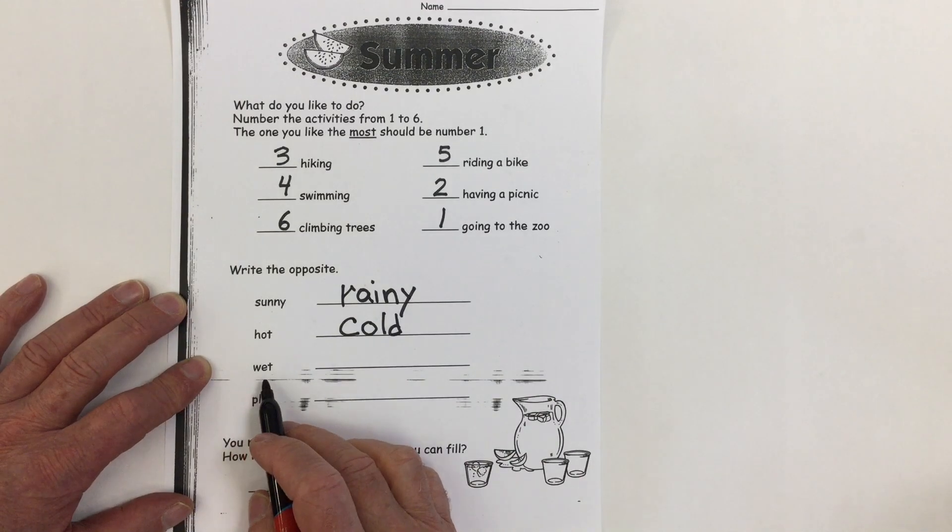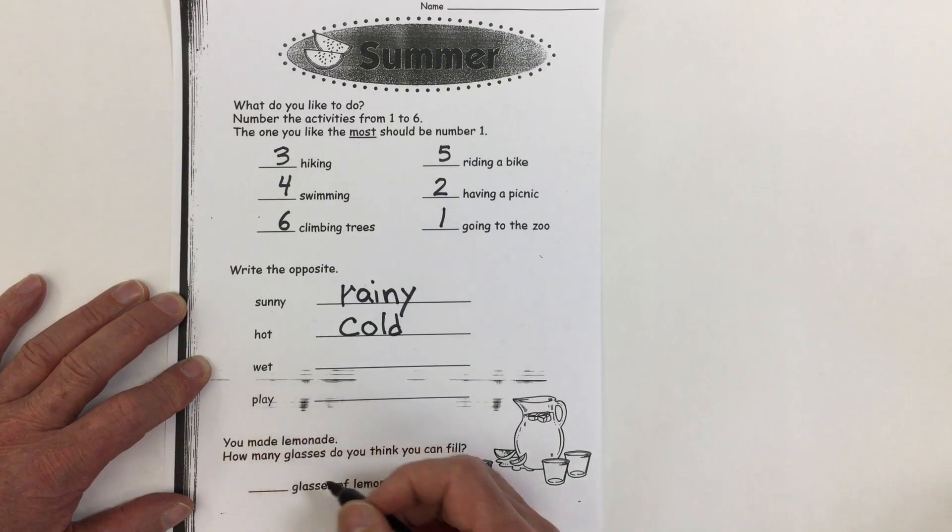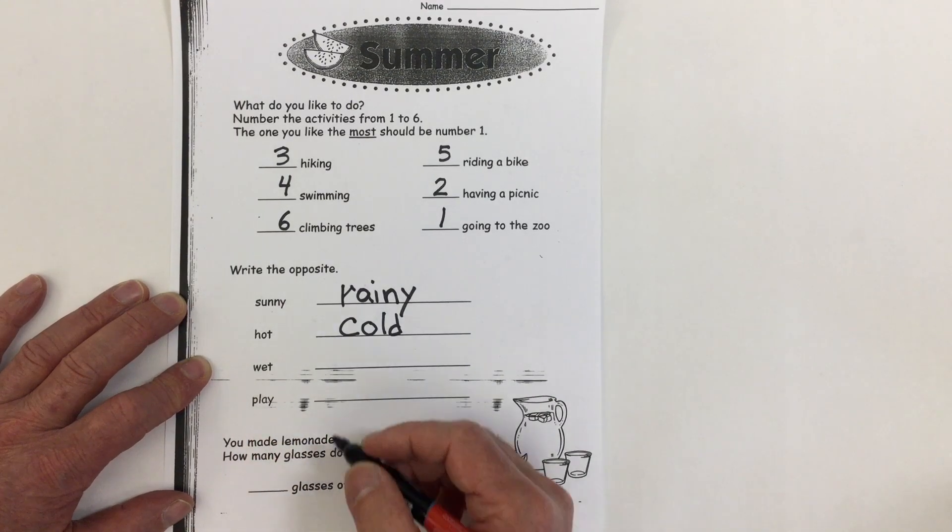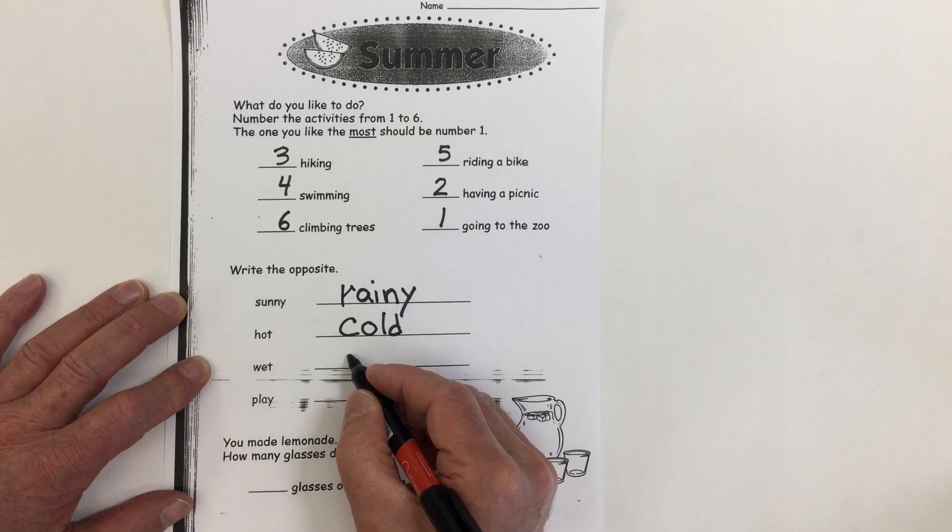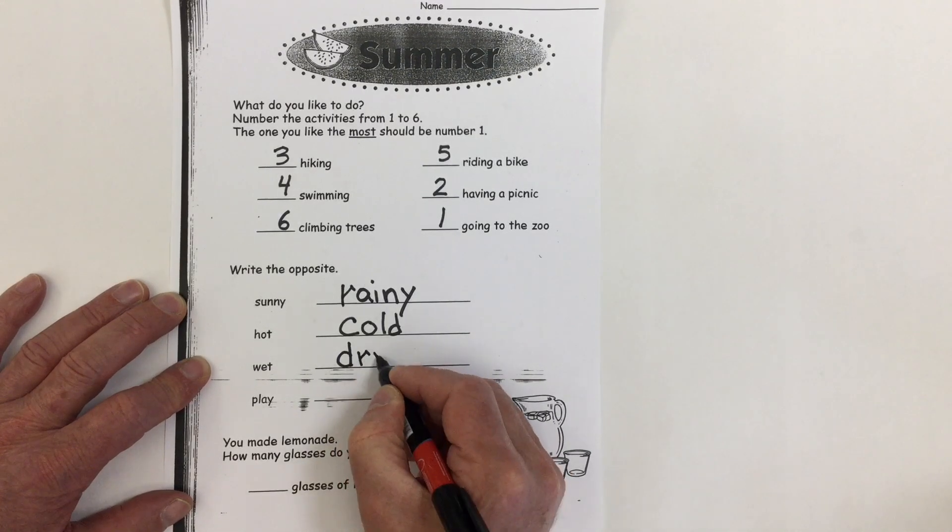What's the opposite of the word wet? Yeah, the opposite to wet is dry. D-R-Y.